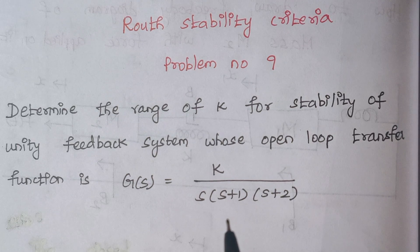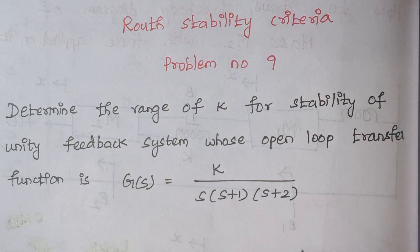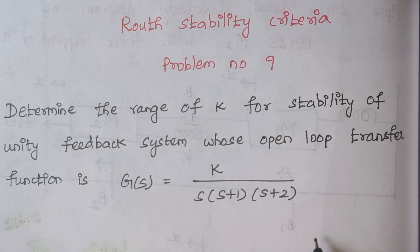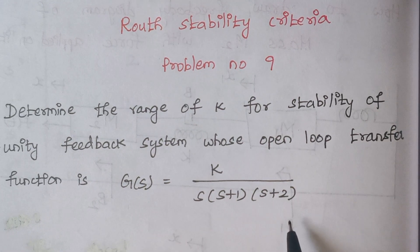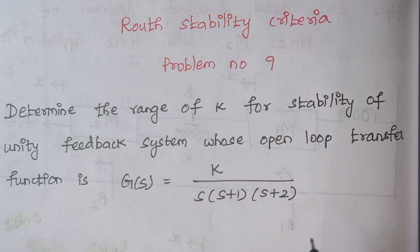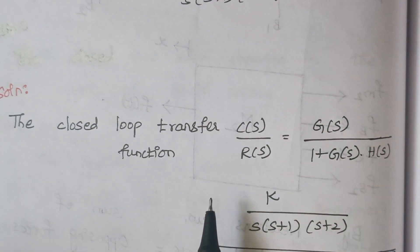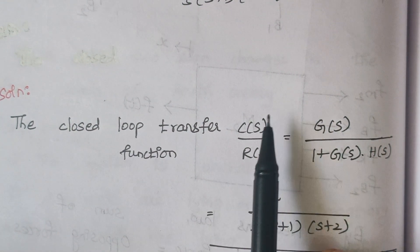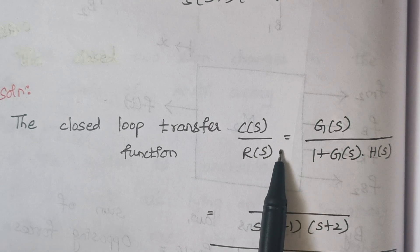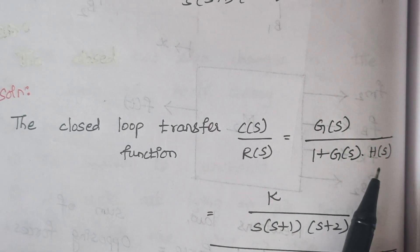The characteristic equation is the denominator part of the closed loop transfer function. So the first step is to find the closed loop transfer function, and from it we find the characteristic equation. The formula for closed loop transfer function is C(s)/R(s) = G(s) / [1 + G(s)·H(s)].